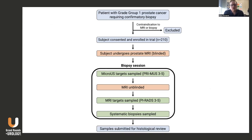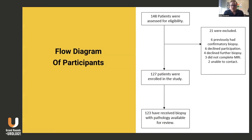In this trial, men with Gleason grade group 1 prostate cancer who require confirmatory biopsy are enrolled and undergo an MRI, to which the urologist is blinded. At the start of the biopsy session, micro-ultrasound targets are taken — any Primus 3 to 5 lesions — at which point the urologist is unblinded to the MRI, and any unsampled MRI-positive targets are then sampled. Systematic biopsies are also taken, and all are submitted for standard histological review. So far, 127 patients have been enrolled, with 123 having received biopsy with pathology available for analysis.